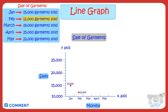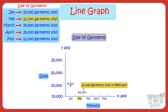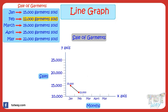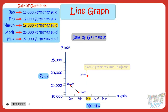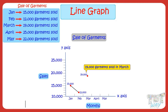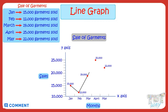We will make a dot along the month of February and the sales 12,000. This dot corresponds to month of February and sales 12,000 garments. Now join the two dots using a line. Now plot the next information. Sales for the month of March are 19,000 garments, so we will make a dot along the month of March and sales 19,000. This dot corresponds to month of March and sales 19,000 garments. Similarly, plot all the information, join the dots, and the line graph is ready.